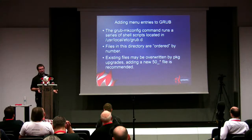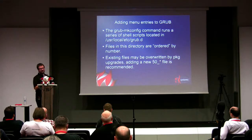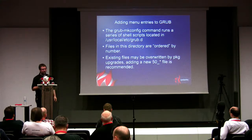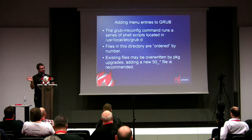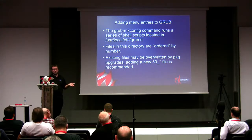For adding menu entries: the grub-mkconfig command is actually a shell script that executes a series of shell scripts located on a FreeBSD system in /usr/local/etc/grub.d. There are default files ordered by numbers — lower numbers get executed first. These files may be overwritten by package upgrades, so don't tweak those. But you can add new files into this directory — say you want custom menu entries for Linux or Windows, you can just add a new shell file that echoes out the syntax and that gets included in your config automatically.